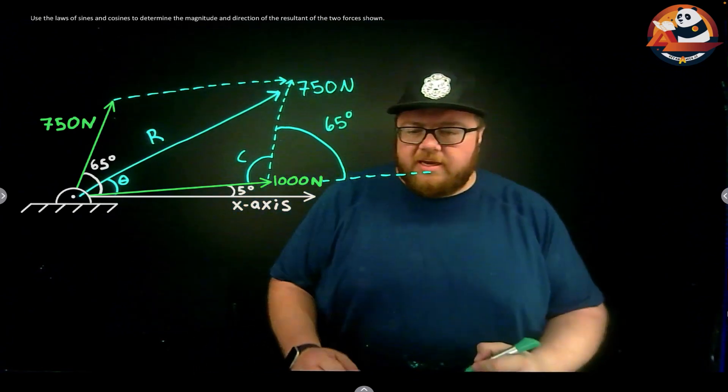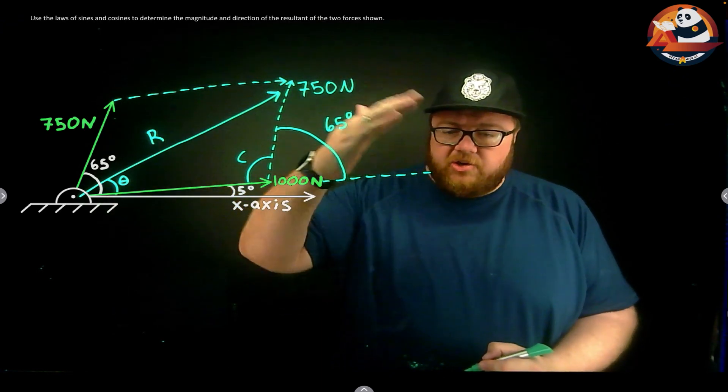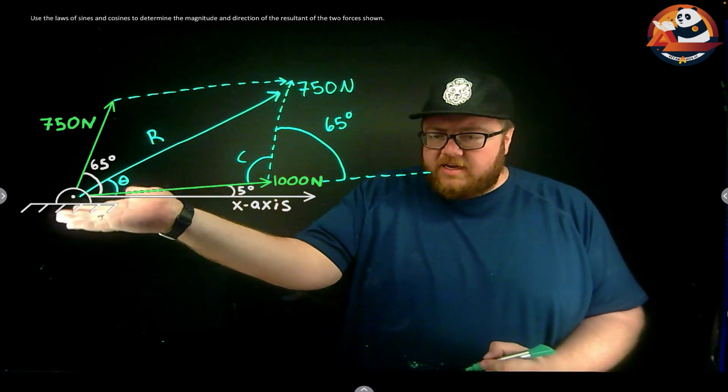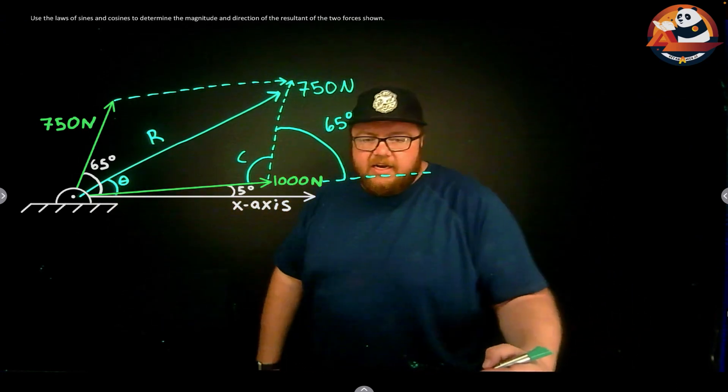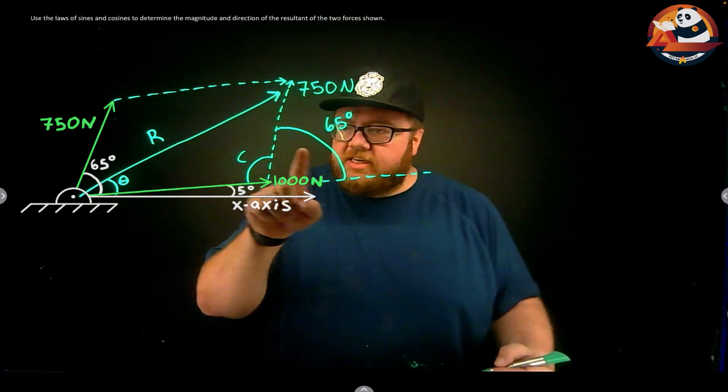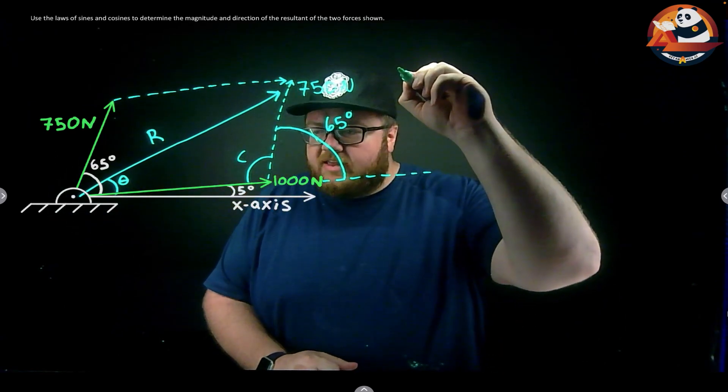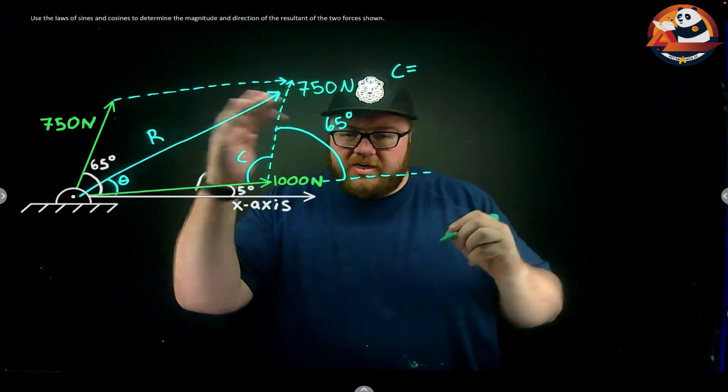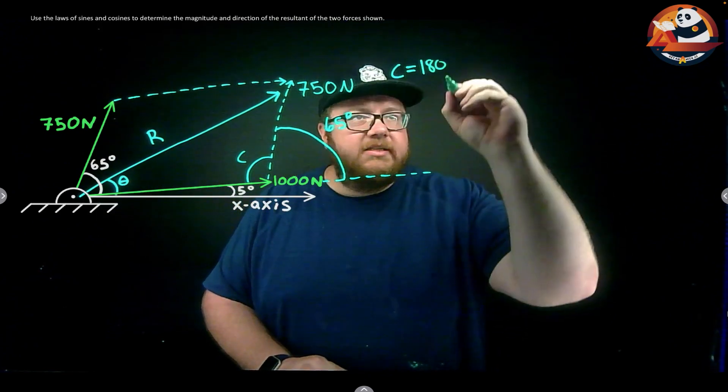Let's look at that one labeled in here. I also know that from 1000 to that 1000 newton force is 180 degrees - from a line to itself is 180 degrees - and 65 plus C gets that full 180 degree angle.